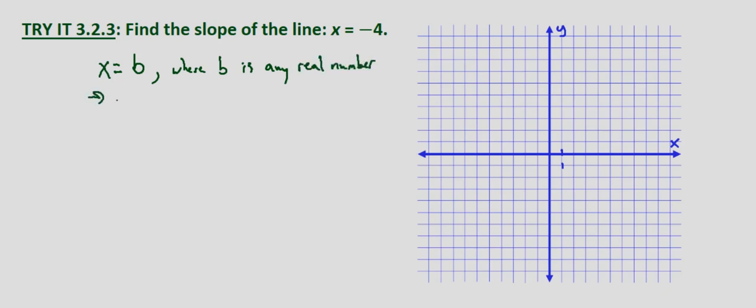That is a vertical line at x equals b. So we're given x equals negative 4. And what that means is negative 1, negative 2, negative 3, negative 4. We're going over to our graph. That means x equals negative 4 is simply a vertical line at x equals negative 4.